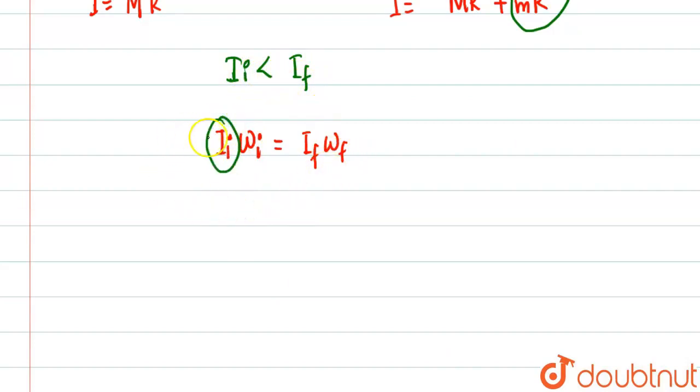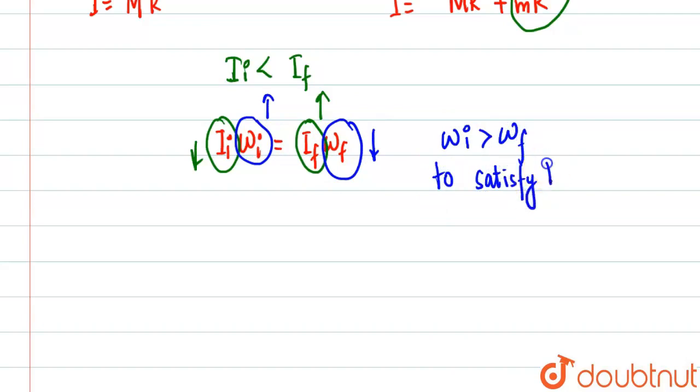This quantity and this quantity—this is greater, this is less. That means to balance this equation, I·ω for initial must be more than I·ω for final. That means ω_i must be greater than ω_f to satisfy this equation.